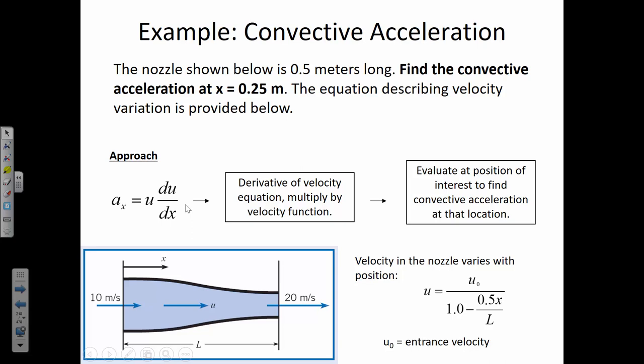I'm going to work this one on the board. The given information is: the length L is 0.50 meters, the initial velocity u-naught is 10 meters per second, and the position of interest is x equals 0.25 meters. I'd encourage you to take notes on this — you've got a homework problem that's closely related. The velocity changes as a function of position.